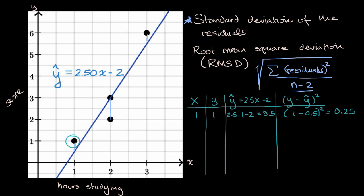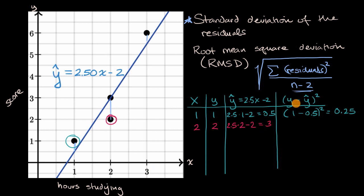Next data point: (2, 2). Our estimate from the regression line when x equals two is 2.5 times two minus two, which equals three. So our residual squared is (2 minus 3) squared, which is negative one squared, which equals one.